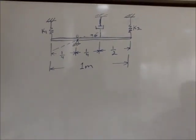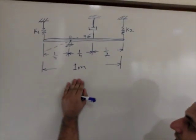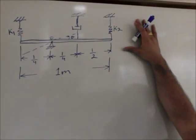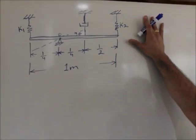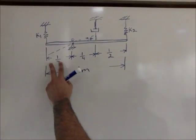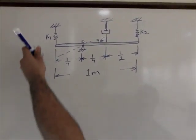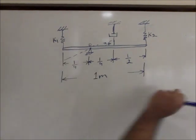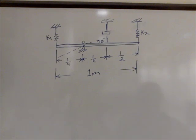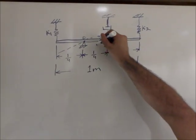Welcome back everybody. This is for anyone that's taken a vibration class. We are going to come up with the equation of motion for this problem. As you can see, I've located the distances — we have a spring k1, another spring k2, and a damper. We're assuming that this rod, from its original position, is going to rotate counterclockwise.